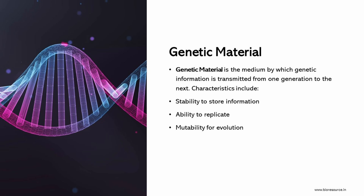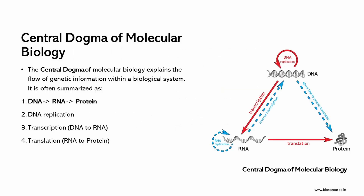Before going into the details of the central dogma of molecular biology, let's understand the genetic material. Genetic material is the medium by which genetic information is transmitted from one generation to the next. It must be stable to store information, capable of accurate replication, and mutable for evolution. DNA fits all these criteria perfectly, making it the ideal genetic material. The central dogma of molecular biology explains the flow of genetic information within a biological system, often summarized as DNA to RNA to protein. This involves DNA replication, transcription of DNA into RNA, and translation of RNA into proteins — processes fundamental to all life.